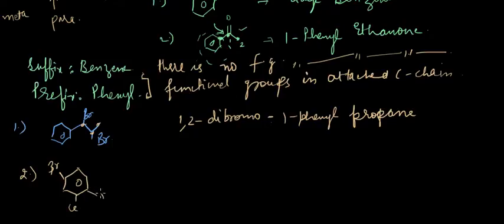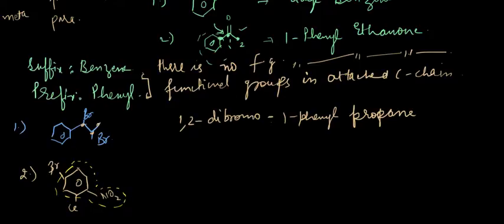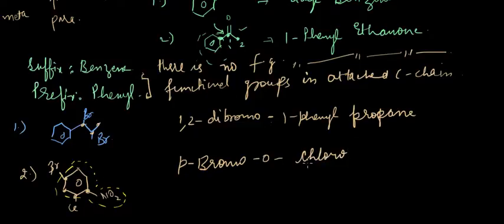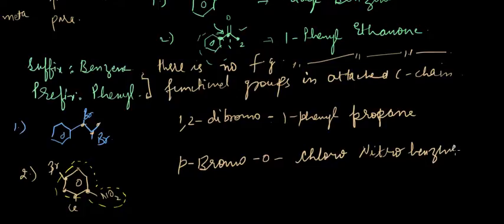For the next example with Br, Cl, and NO2: no alkane chain or carbon chain is found attached as a substituent to any carbon atom of the benzene ring, so we'll use benzene nomenclature. The name of this compound is nitrobenzene. The ortho position has chloro, the meta position is next, and the para position has bromo. So the full name uses these ortho/meta/para descriptors relative to the NO2 group.